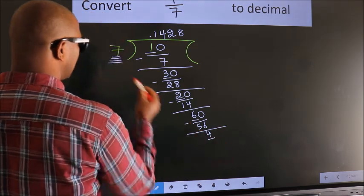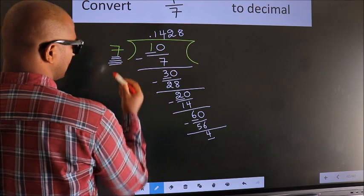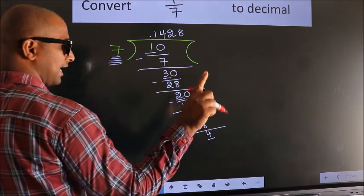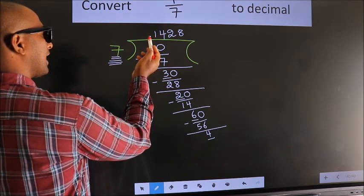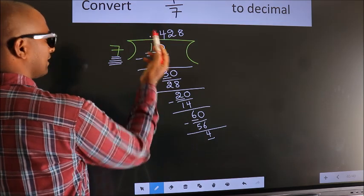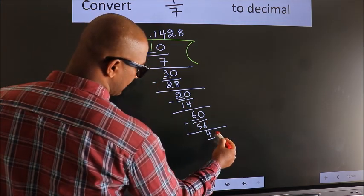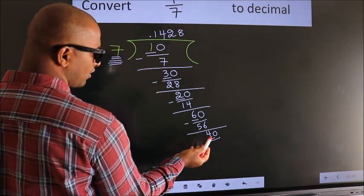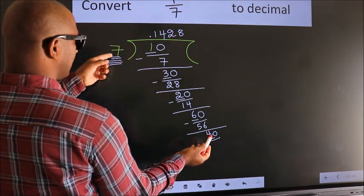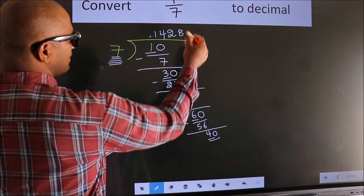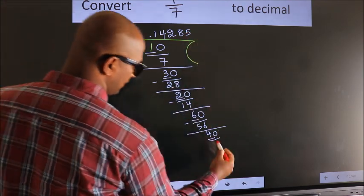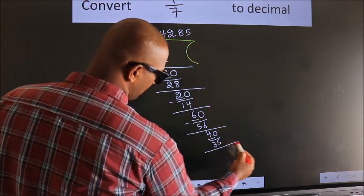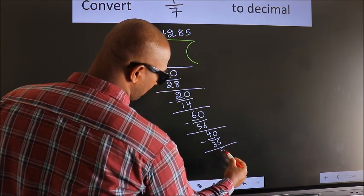Here we have 4, here 7. 4 is smaller than 7. And we already have the decimal, so we can directly take 0. So, 40. A number close to 40 in the 7 table is 7 fives, 35. Now, we subtract. We get 5.